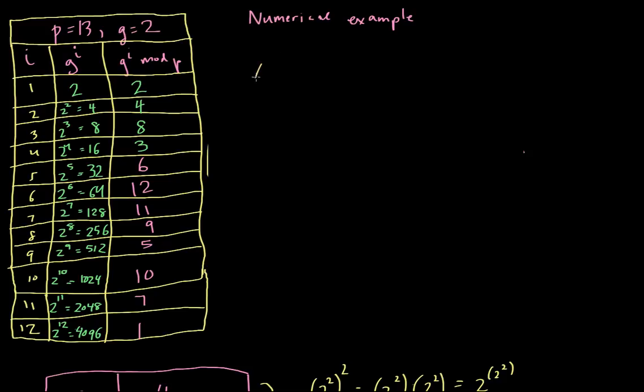Suppose we have Alice and Bob. And the way that we're going to implement the protocol is as follows. Alice is going to start off, and she is going to pick a random number from 0 to p minus 1. So she's going to pick a value lowercase a between, in this case, 0 and 12, because p minus 1 is 12. And let's say in this case the number a she happens to pick is 5.